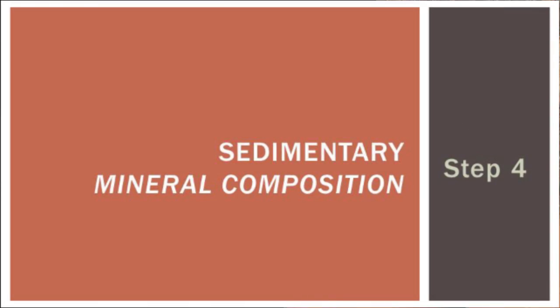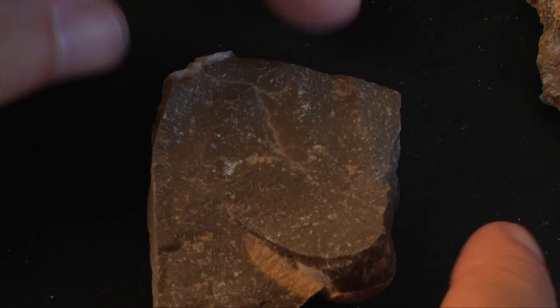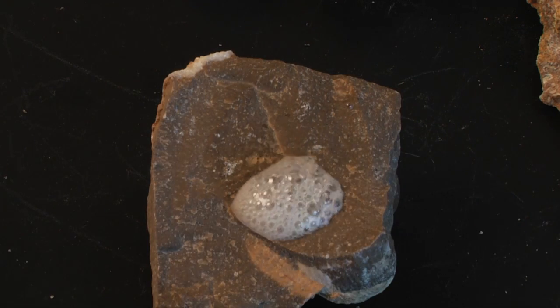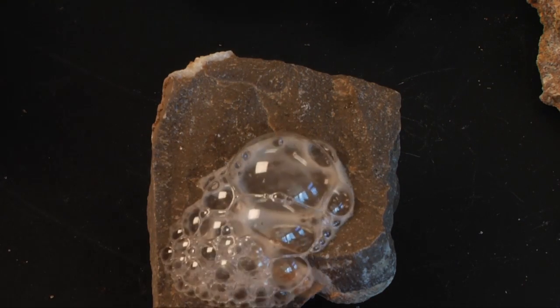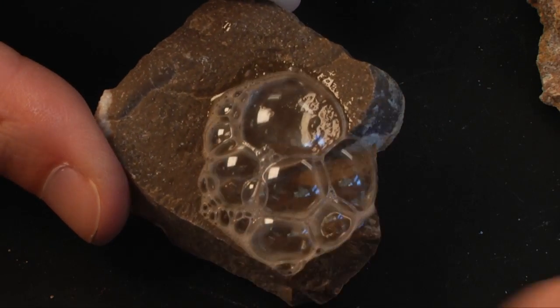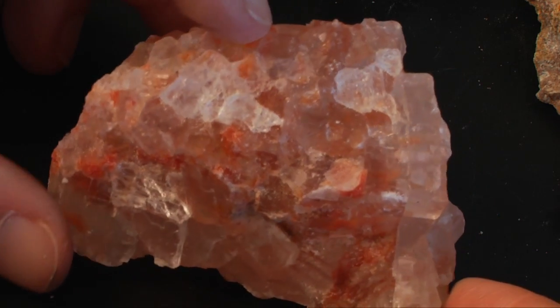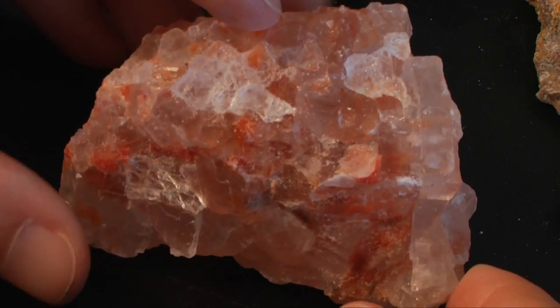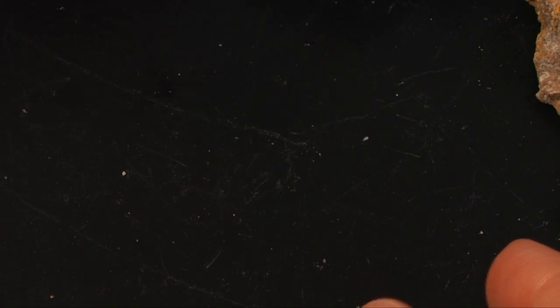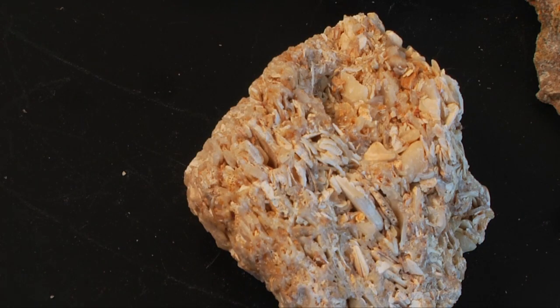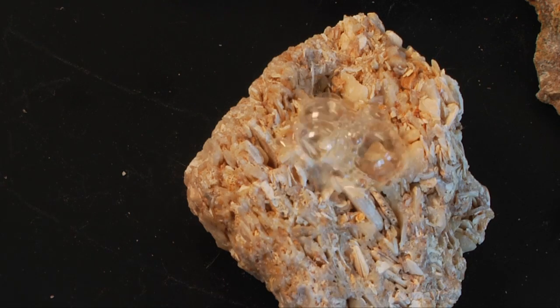After you determine the texture, you're going to look at the mineral composition. If you take your sample and test it with acid, the acid will bubble if you have calcite present — it will fizz like crazy, which means the mineral composition is calcite. If it tastes salty — and remember, don't taste it, ask me — then you're going to have halite present. If you have little bits of shell fragments, this will also react to acid because shells are actually made of calcite.